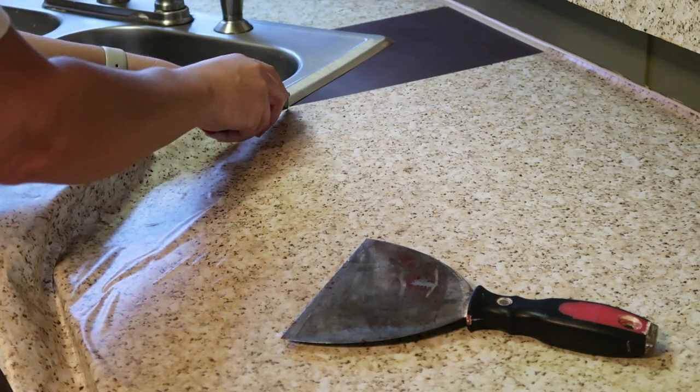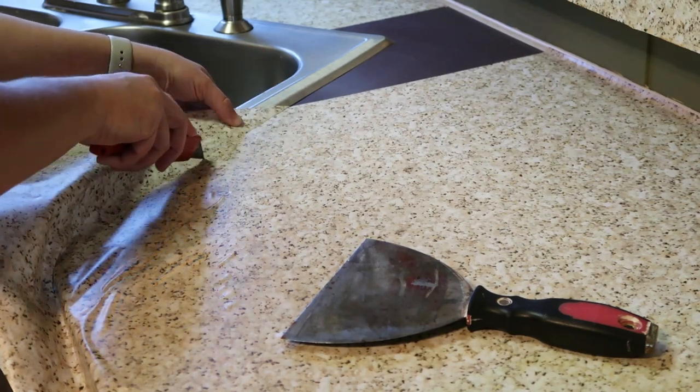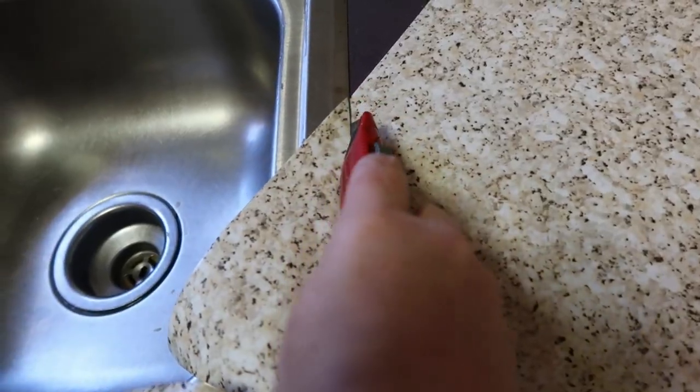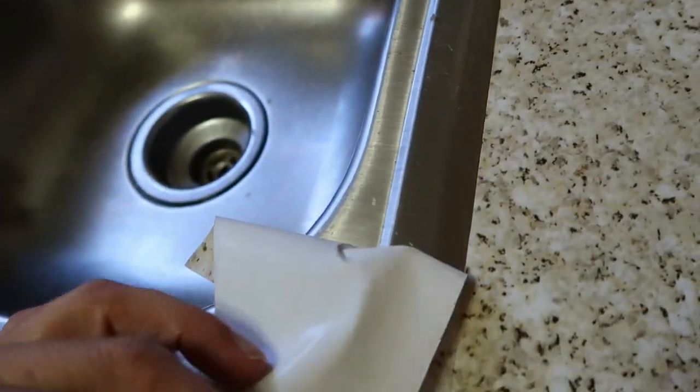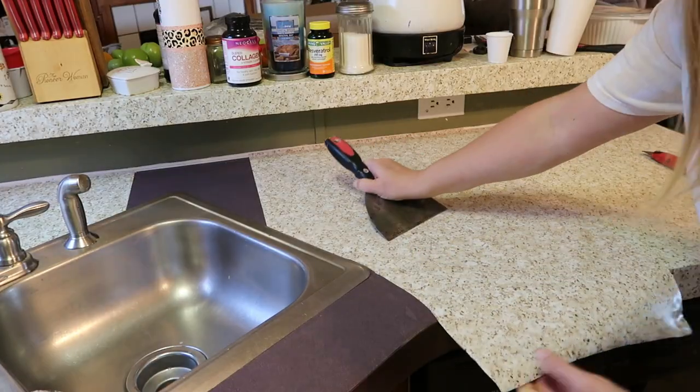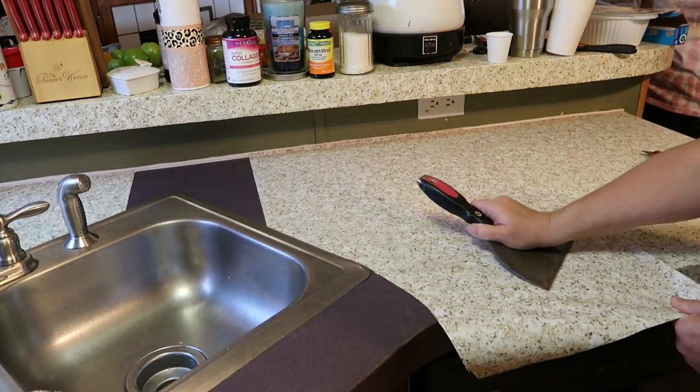Once you get up against the wall or the sink, as you see here, you just cut with a little knife like this right up against it, and it will peel right off and leave super clean edges.